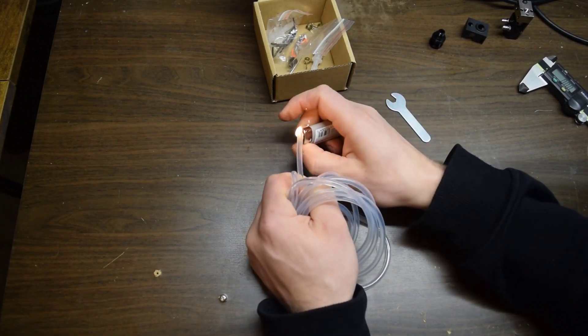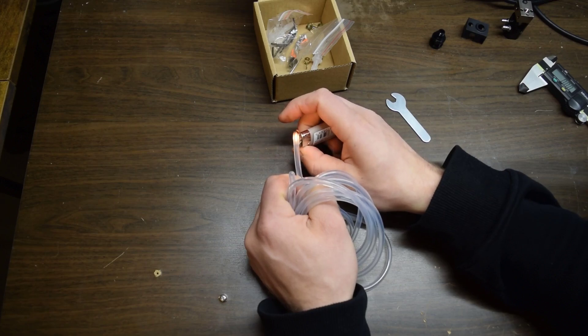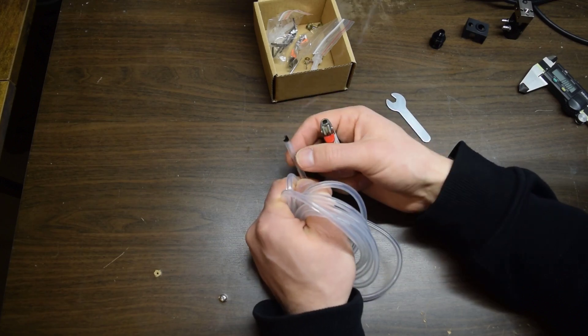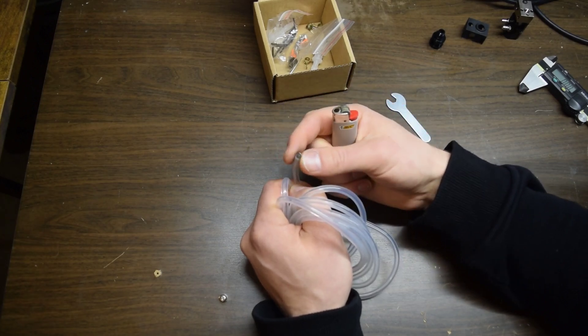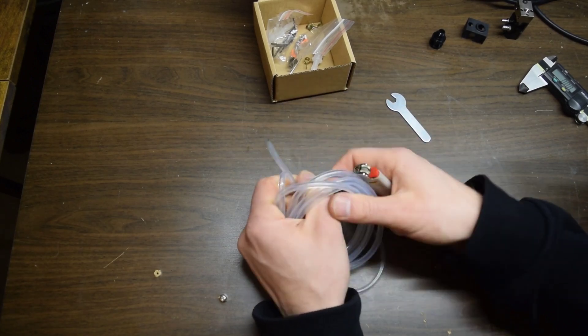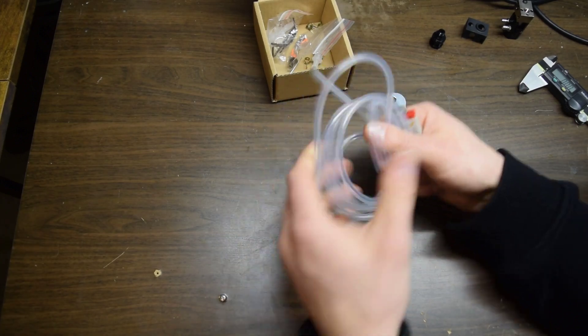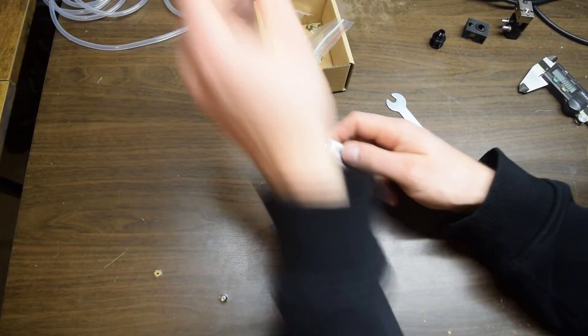It still has its structural integrity there. I've held it there for a little bit longer. A little bit of smoke, but that black is just the soot there. I would trust them to say that that is silicone tubing.